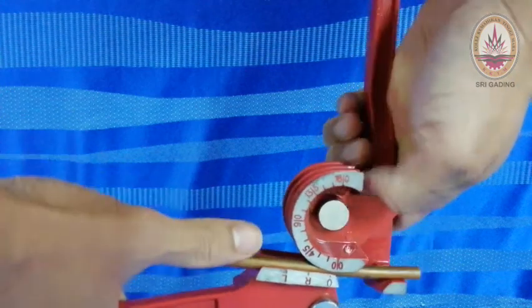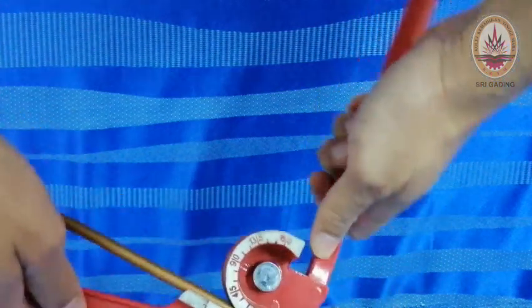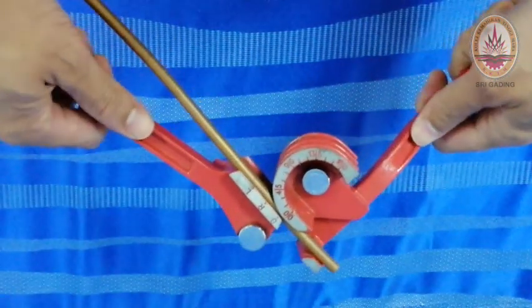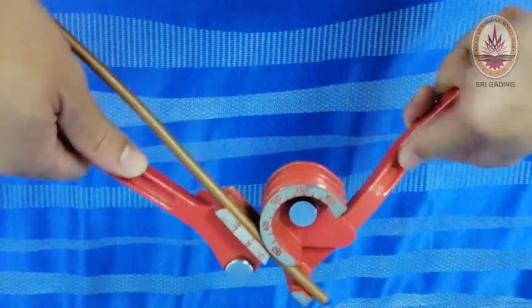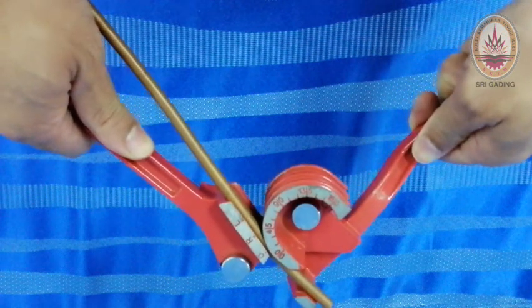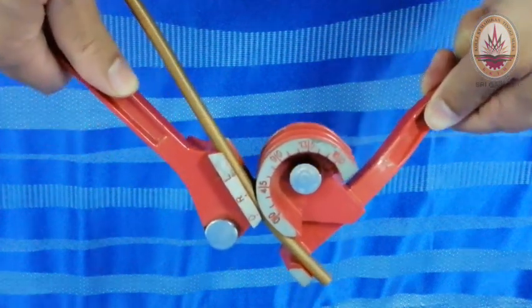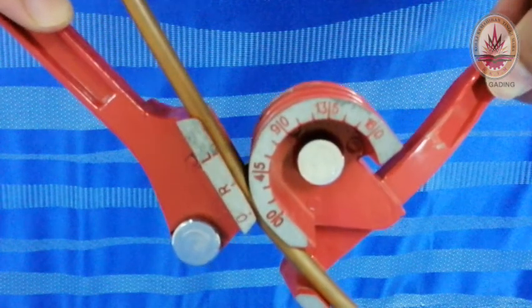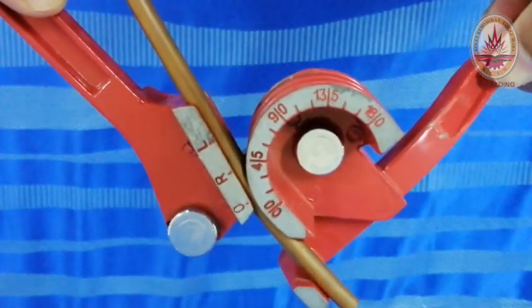Then you just pull this handle toward this handle. Just pull it slowly. You could see the numbers on the curve.